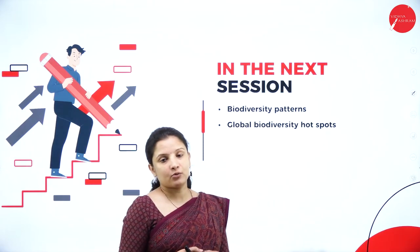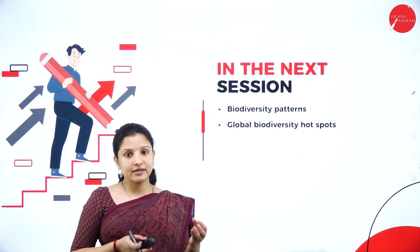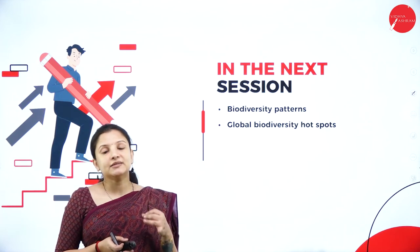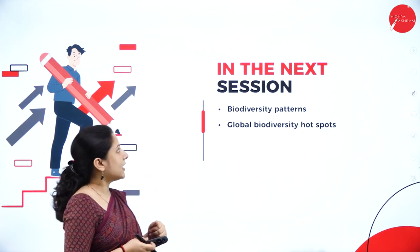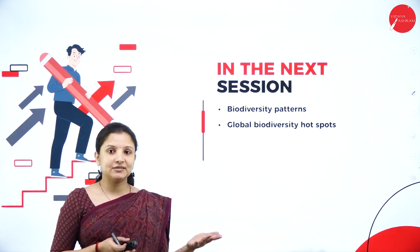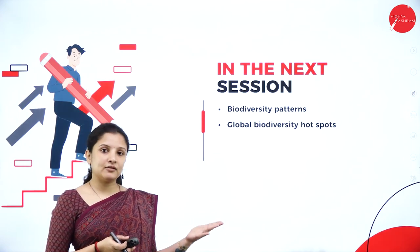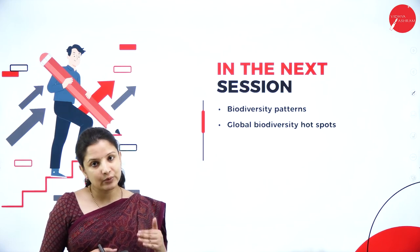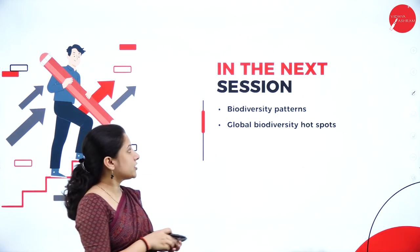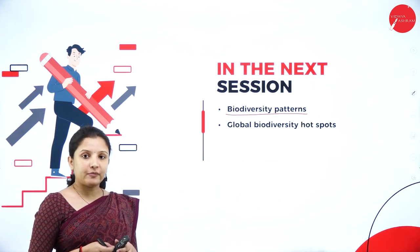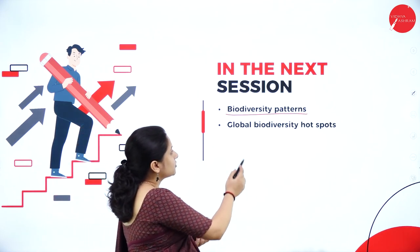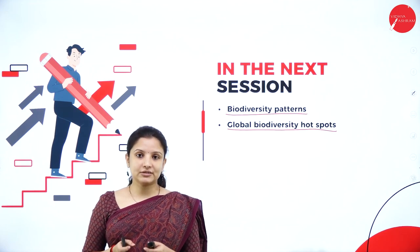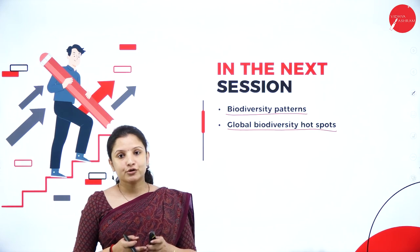In this session we studied about biodiversity under three levels — species diversity, genetic diversity, and ecosystem diversity — with species diversity being the most common study level. We also learned about India's 10 biogeographical zones based on the type of organisms living in different regions. In the next session we shall concentrate on biodiversity patterns and global biodiversity hotspots. Thank you.